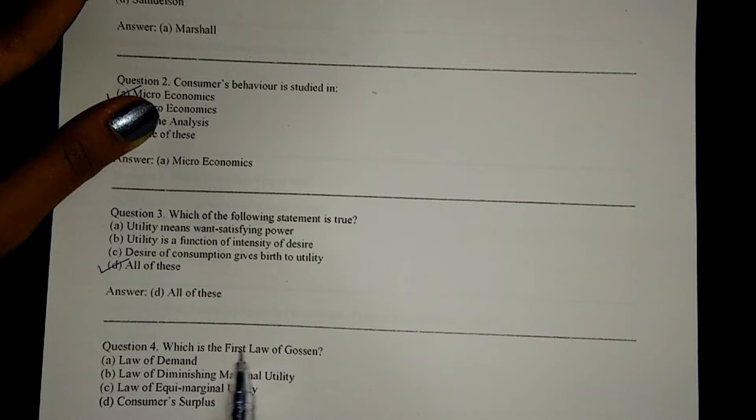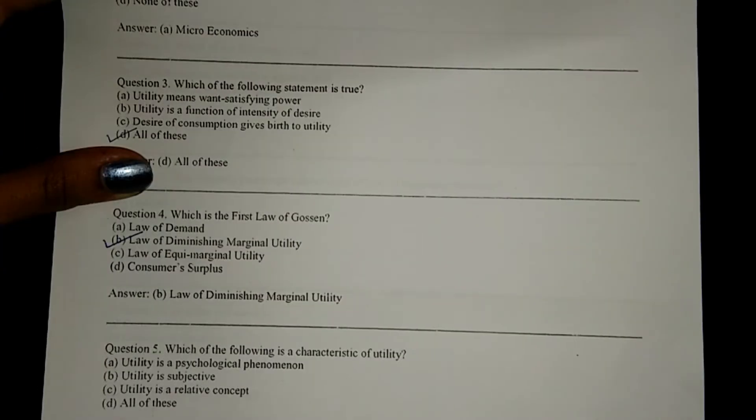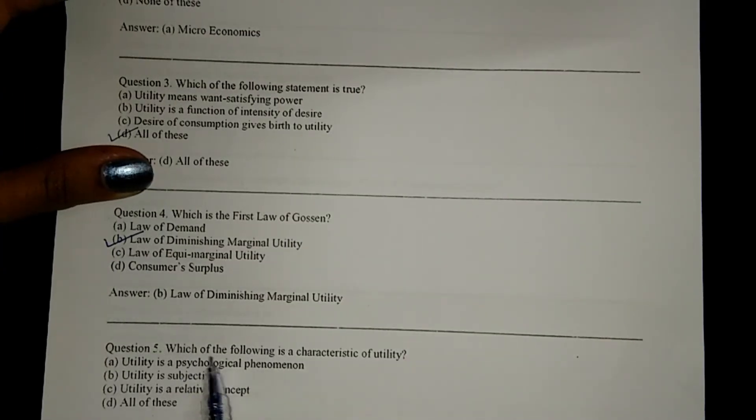Next, which is the first law of Gossen? That is B, law of diminishing marginal utility.